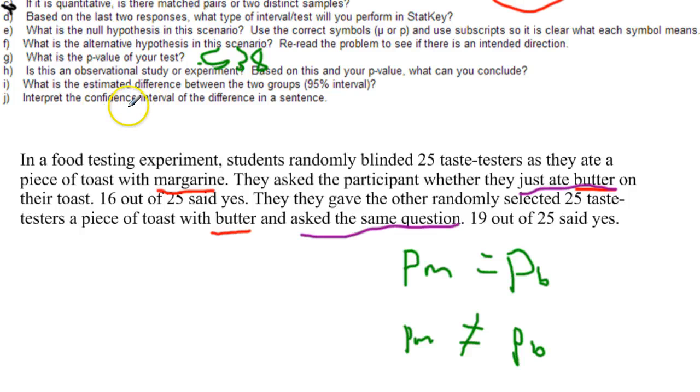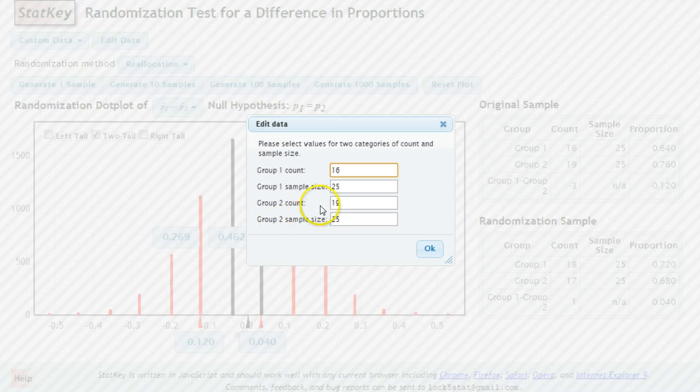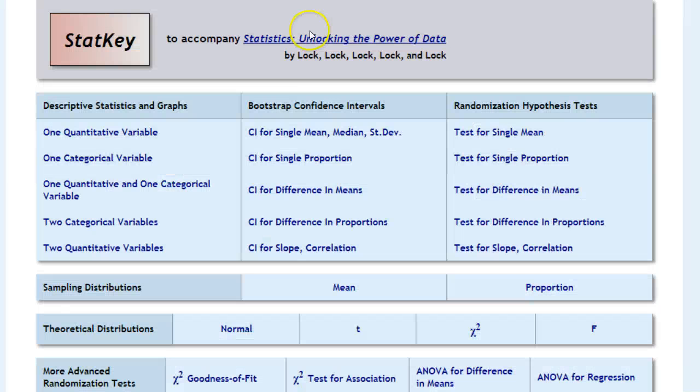Final two questions deal with confidence intervals. So it says the estimated difference between the two groups using a 95% interval. And then interpreting that interval. So we go back to our test. We look at the data that we typed in. And we are going to type the same data into a confidence interval. So 16 out of 25 and 19 out of 25. We are going to choose confidence interval for the difference in proportions.